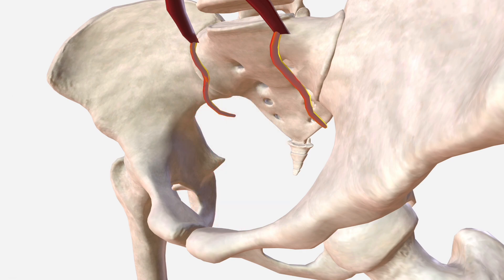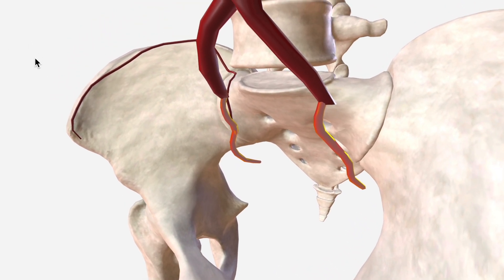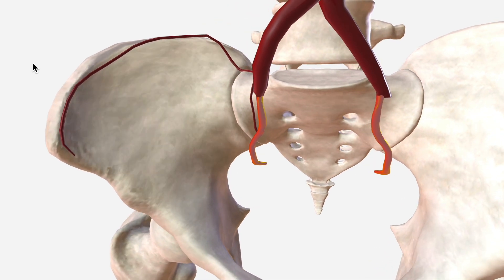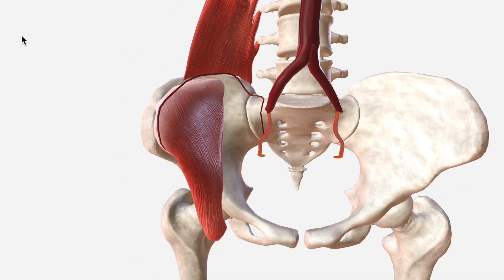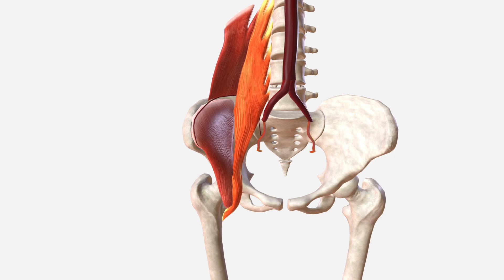We'll remove all of these now and move on to the posterior trunk. The first branch is the iliolumbar artery, which divides into an iliac and a lumbar branch. The iliac branch supplies the iliacus muscle, and the lumbar branch supplies quadratus lumborum and psoas major.